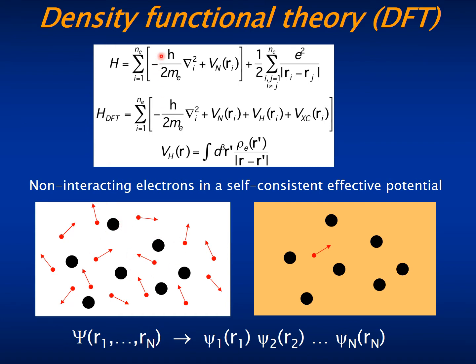What DFT does is to replace this N-electron problem by an effective one-electron problem in which each electron moves independently.